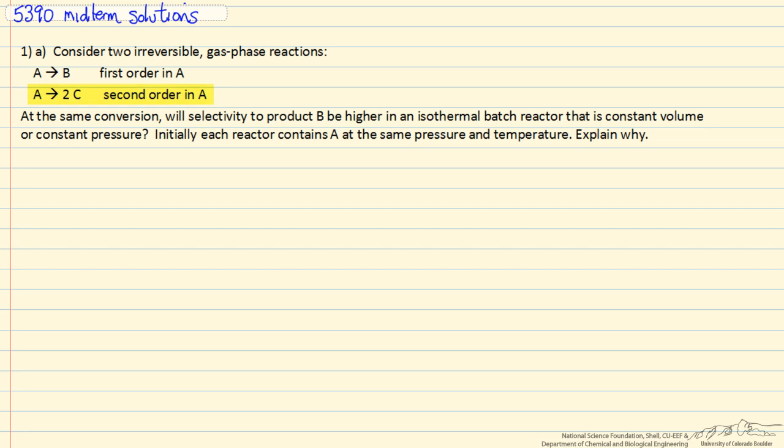We want to compare to the same conversion where we want to have higher selectivity to product B. The question is if we carry out this in a constant volume batch reactor or constant pressure.